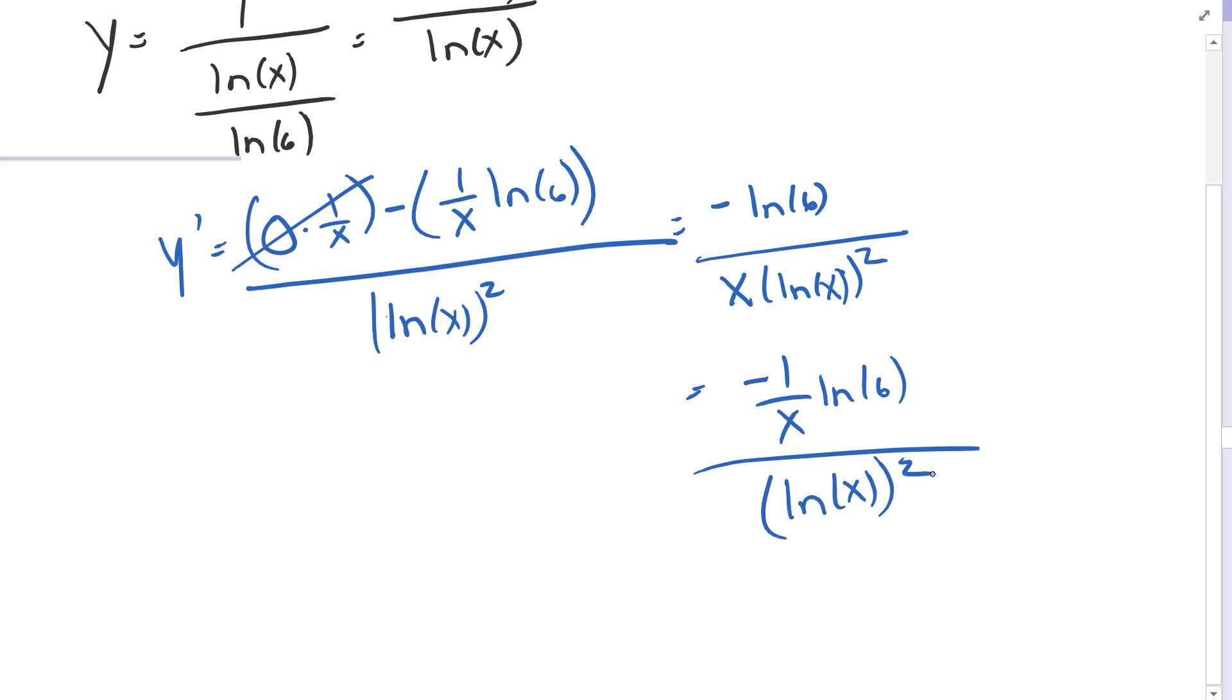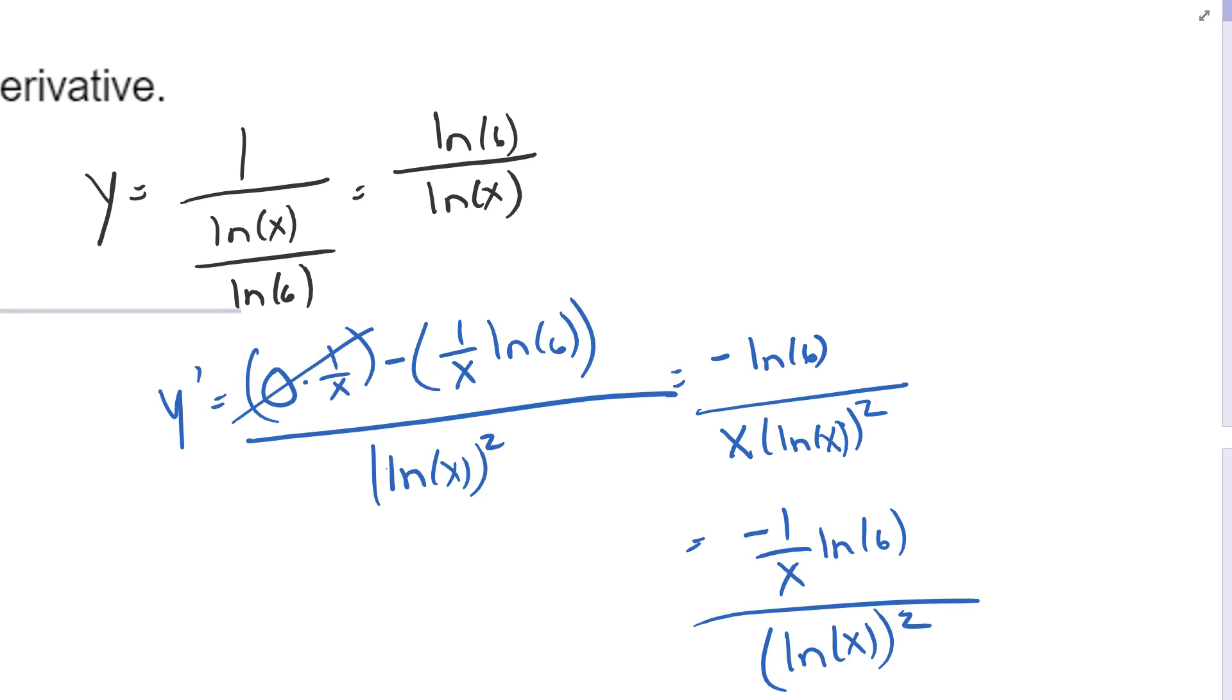Another thing I could do here is I could rewrite this, I could write this as ln of 6 times ln of x to the negative first power, and use the chain rule. This is just a constant.